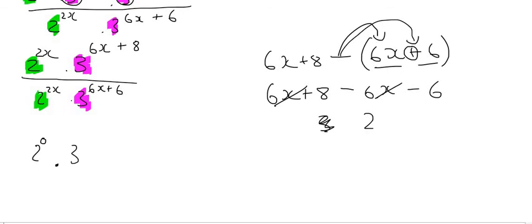So it becomes 3 to the power of 2. Now, 2 to the power of 0 just falls away because that's equal to 1. And then 3 to the power of 2 is 9.